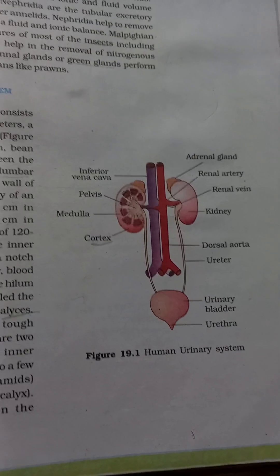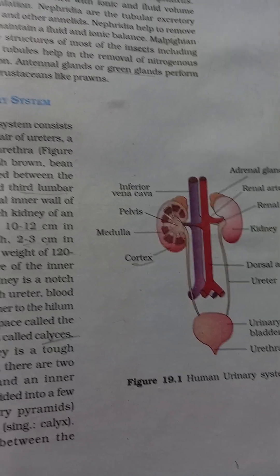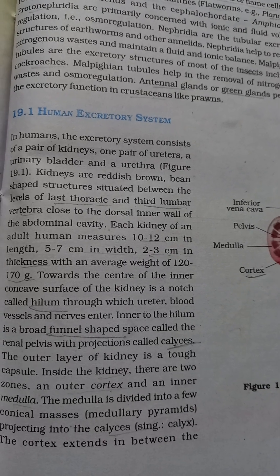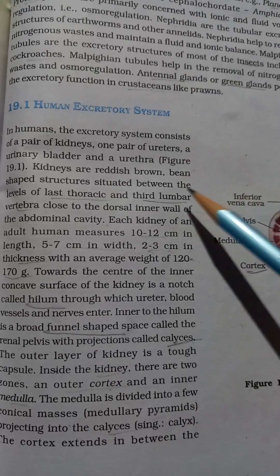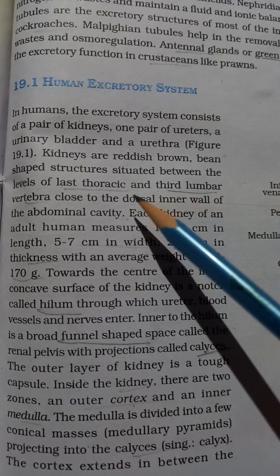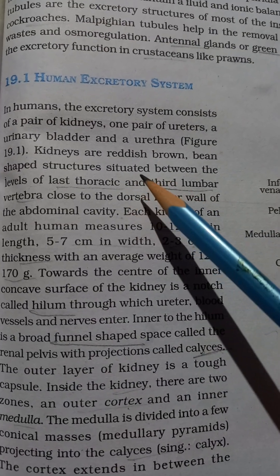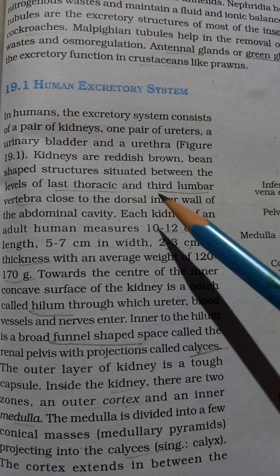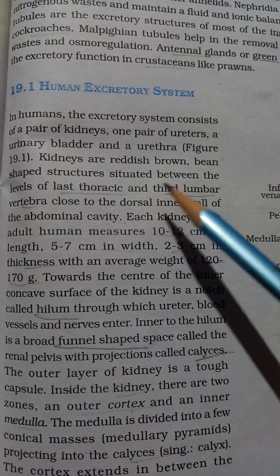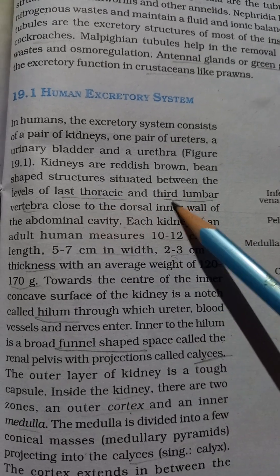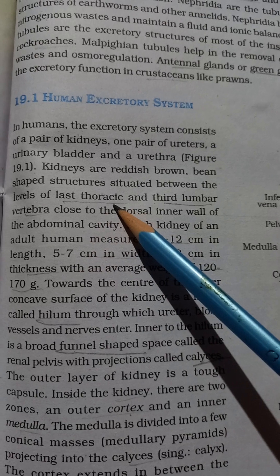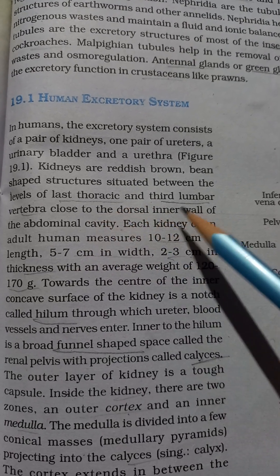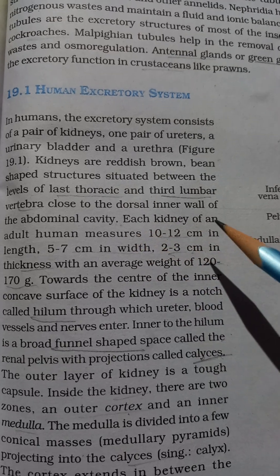Now, for higher standard competitive exams, we will focus on deeper questions. One important thing that can be asked per NCERT is the location of the kidneys. Kidneys are situated between the levels of the last thoracic and third lumbar vertebrae. This is a common one-mark MCQ question.